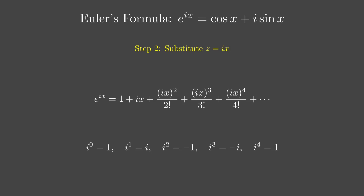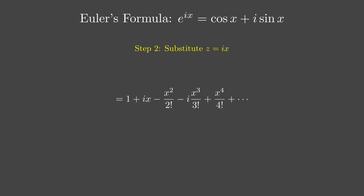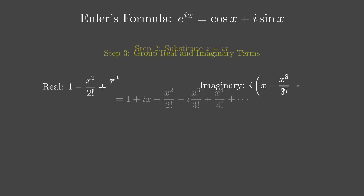Using those powers of i, let's rewrite our series. We get e to the ix equals 1 plus ix plus i squared x squared over 2 plus i cubed x cubed over 3 plus i to the 4th x to the 4th over 4 plus dots. Substituting the powers, this becomes 1 plus ix minus x squared over 2 minus i times x cubed over 3 plus x to the 4th over 4 plus dots. Look at that — the terms are starting to split into two groups, one with i and one without.